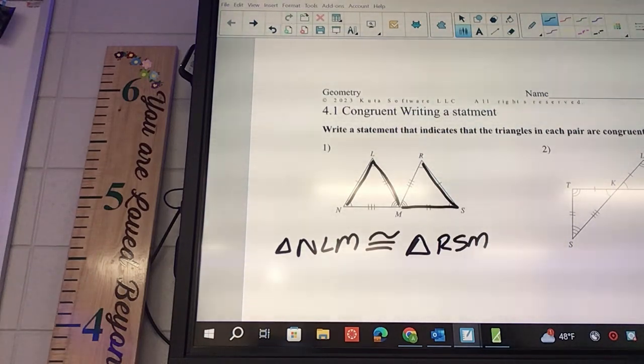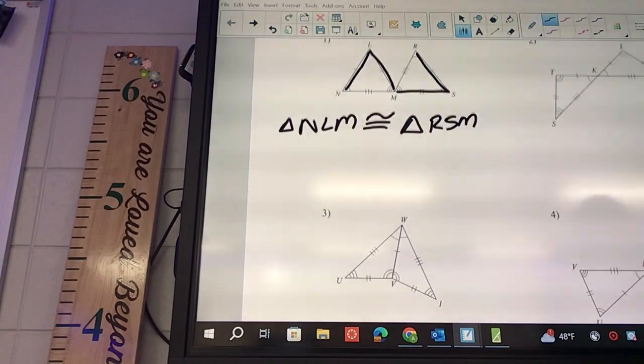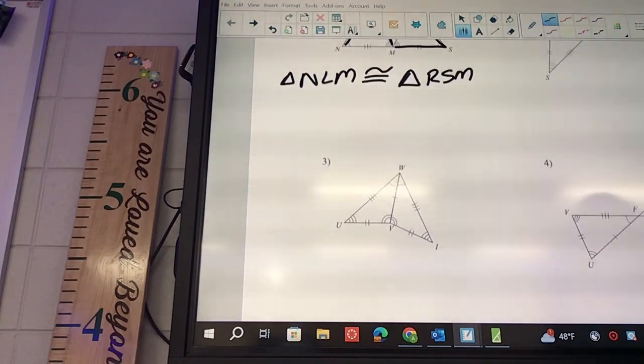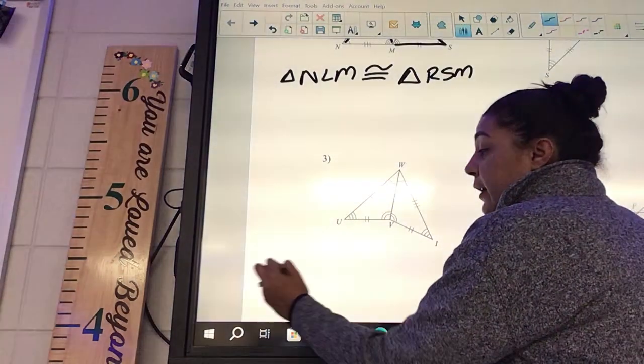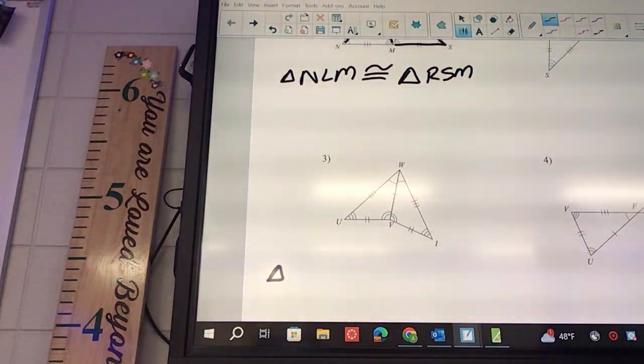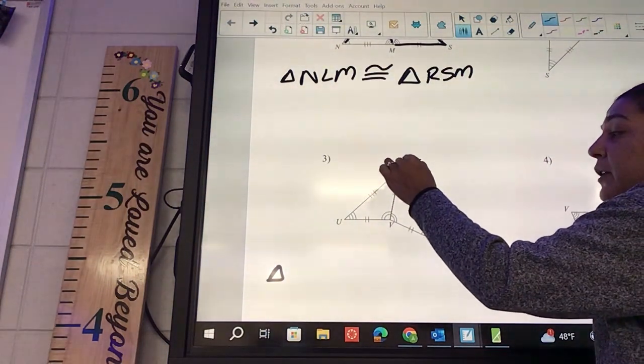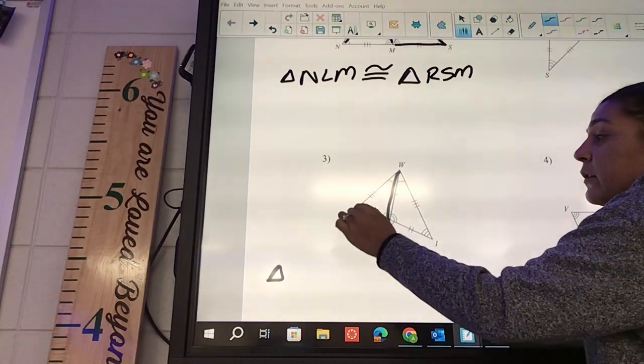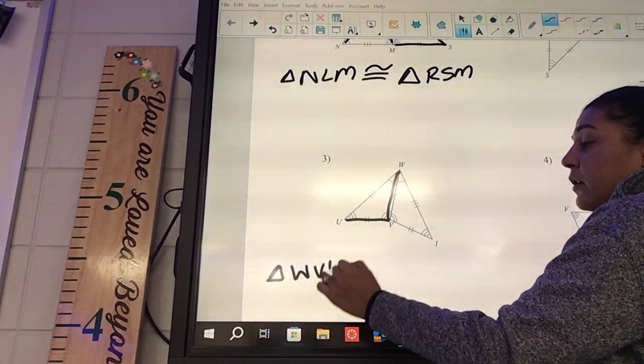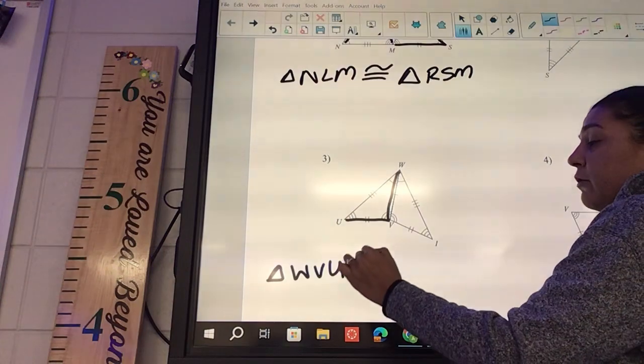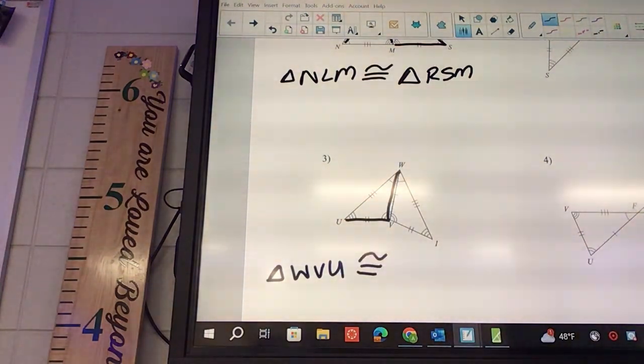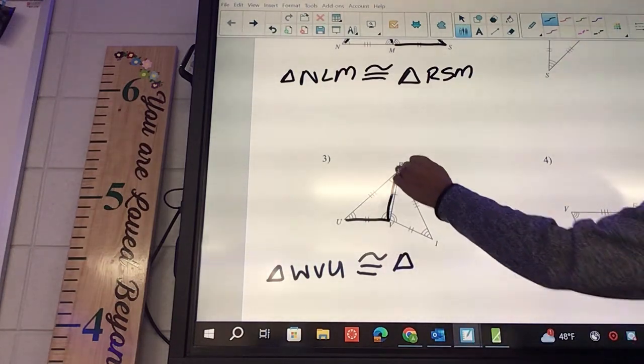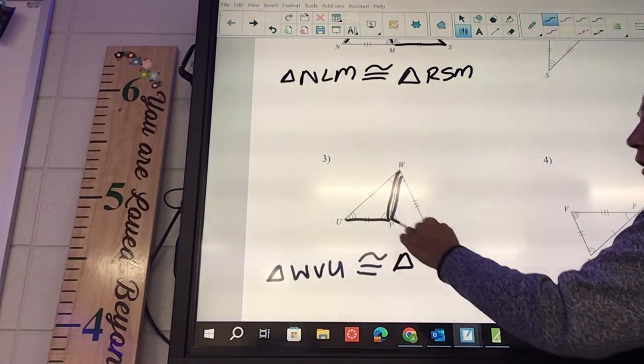You need to make sure you have the angles, you have the congruent signs, and you're going in the correct order, but that's it. Look at number three. We're going to say triangle - we're going to go from W to V to U, so WVU is congruent to triangle WVI.